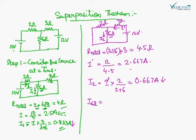Now the current through the 6 Ohm resistance will be I1 plus I2, as the directions are the same, so we add both currents. That is 0.833 plus 0.667, giving the answer 1.5 Ampere. So what we did: we had 2 sources, considered each one separately, found how much current flows through this resistance, and at the end added both currents. That is the total current flowing through the 6 Ohm resistance.